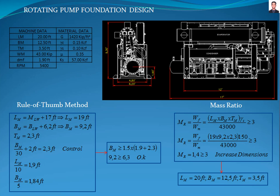The dimensions of the foundation are calculated with the rule of pump method, in accordance with section 7.1.2.1 of the American Concrete Institute 351.3R standard. This method requires that the mass of the foundation should be at least three times the mass of the rotating equipment, and the width of the foundation should be at least 1.5 times the vertical distance from the base of the foundation to the center line of the equipment. The length and width of the foundation are calculated with these equations, where Lm is the length of the foundation.